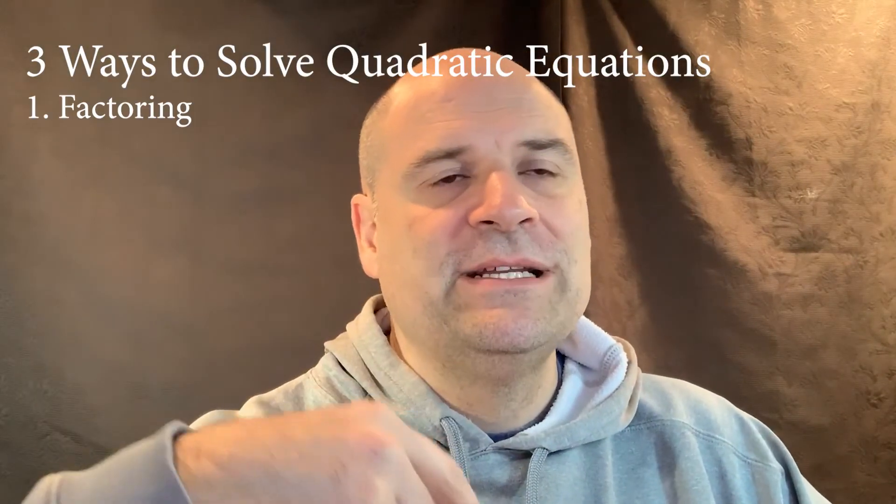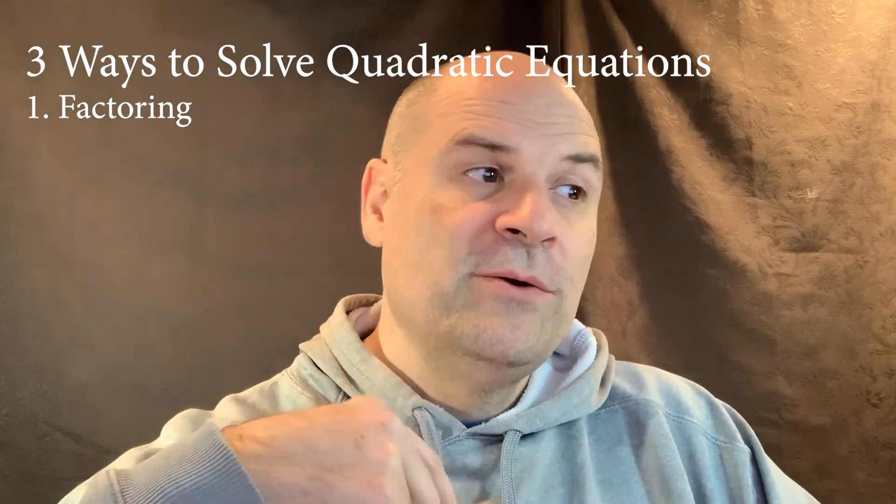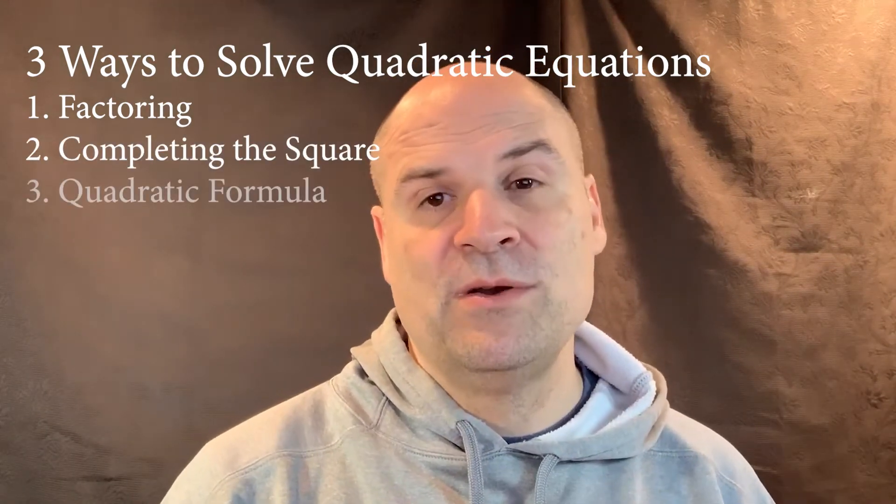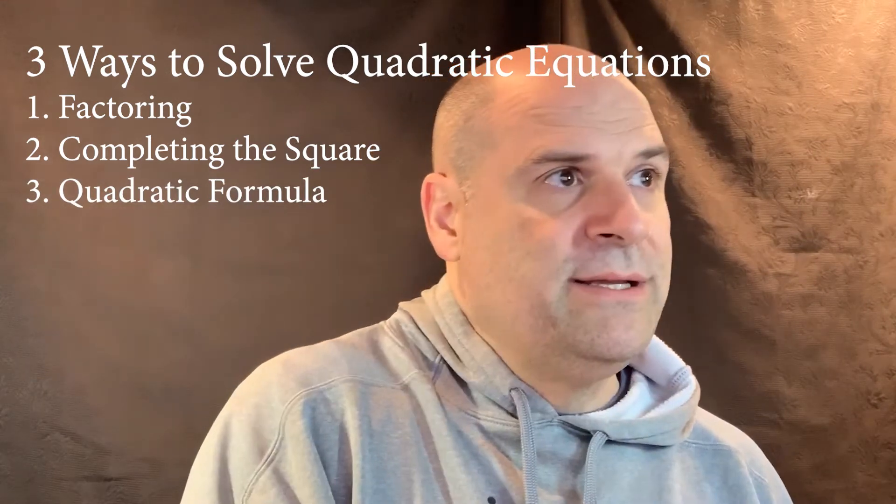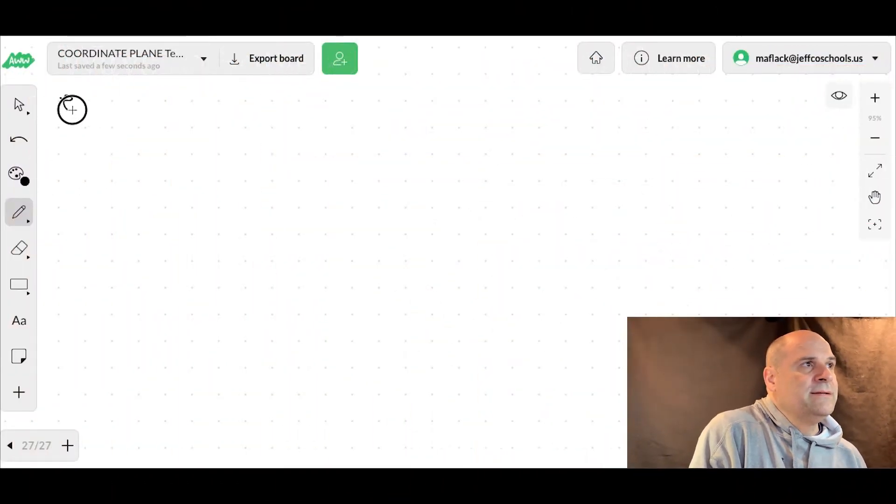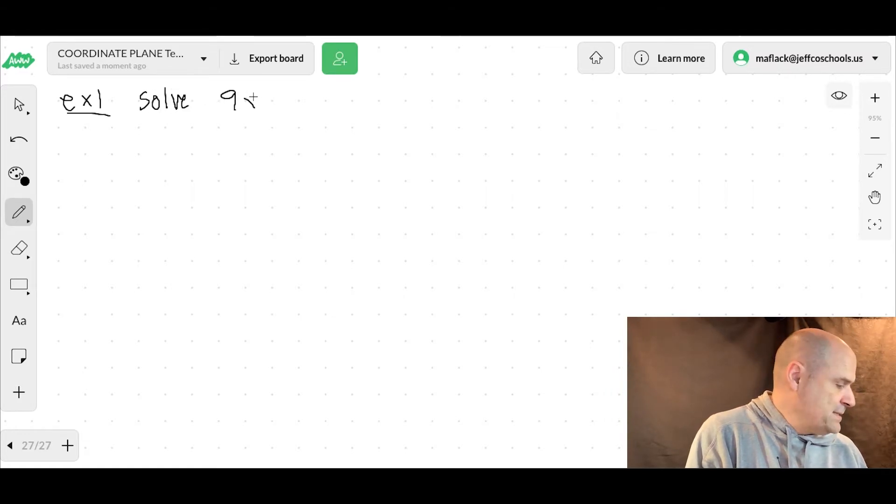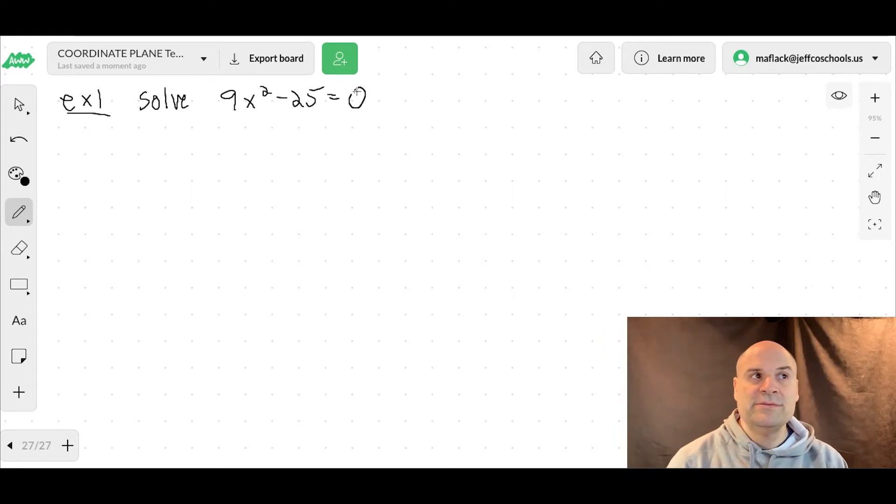You can solve by factoring if the quadratic is factorable. We can solve by completing the square, and we can solve by using the quadratic formula. Let's just get right into it. Example one, solve 9x squared minus 25 equals zero. So we're going to solve by factoring. Let's see if we can first.